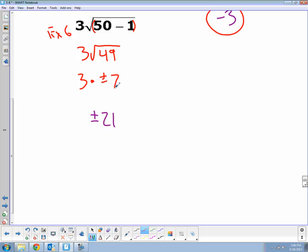Three times positive seven, positive 21. Three times negative seven, negative 21. So our final answer is plus or minus 21.